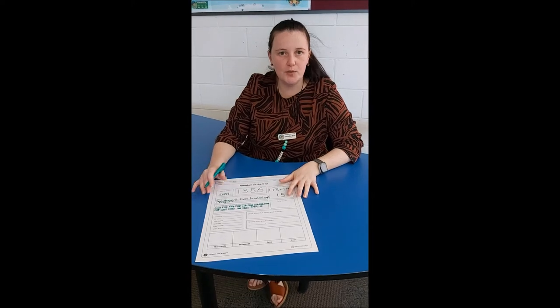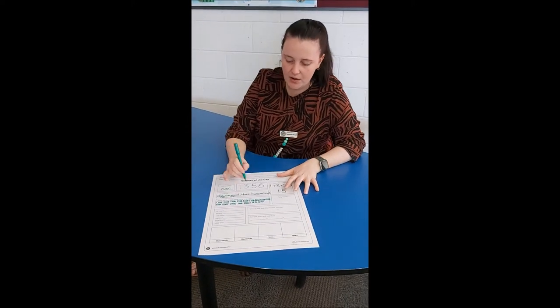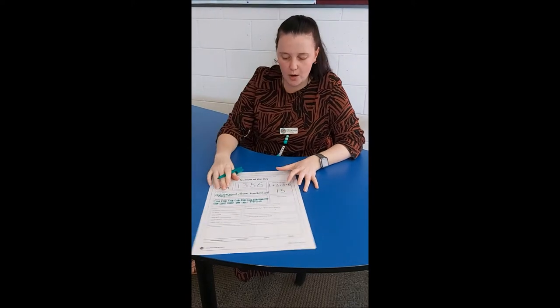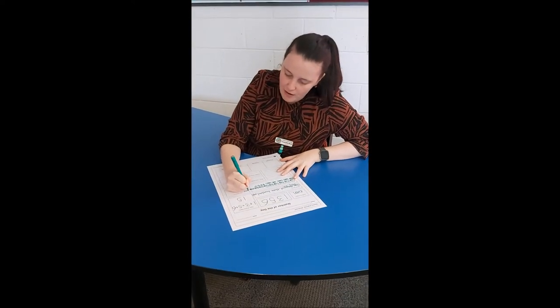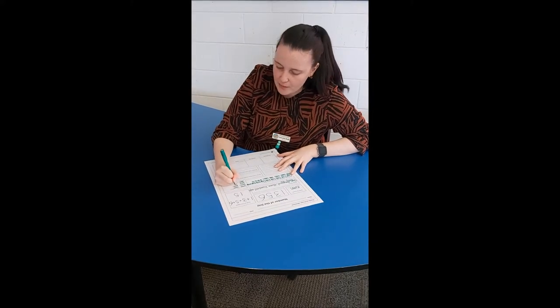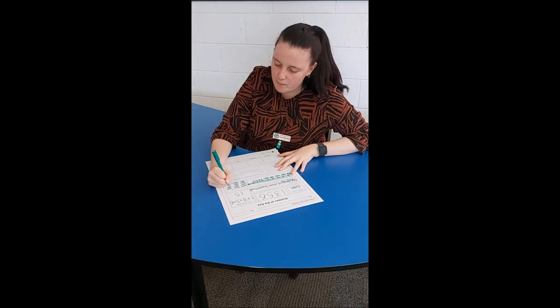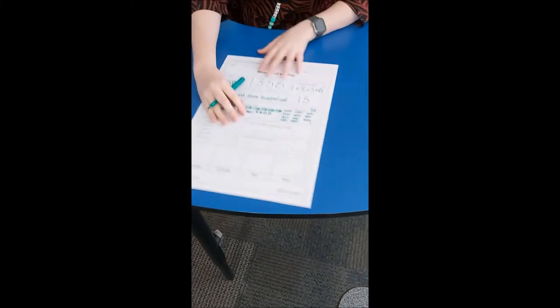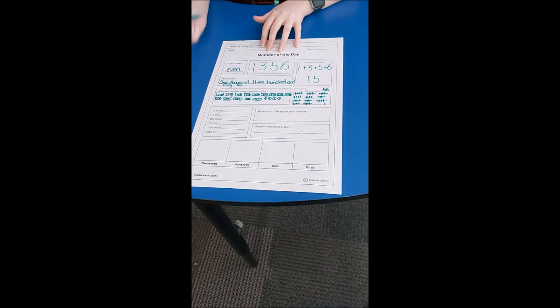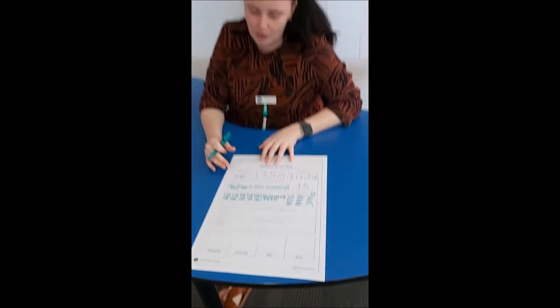Now this one here is tally marks. You would be going for a long time with a thousands number, so I'm just going to do the 56 part — I don't think I have enough room for more, but I'm going to give it a go. Going one, two, three, four, five... counting up to 56 tally marks. If you have a spare piece of paper at home and you want to do all 1,356 tally marks, you can do that if you want.